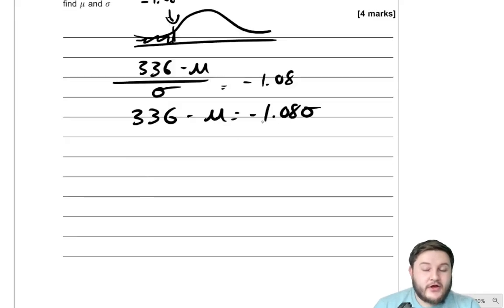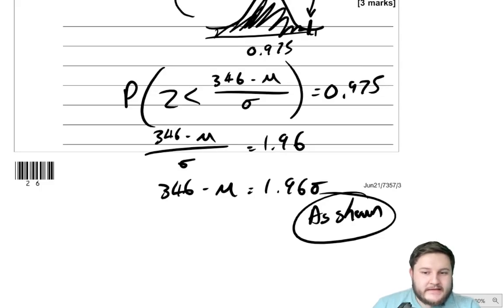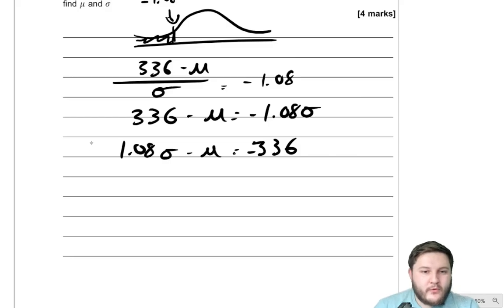And then we can rearrange. So we get 1.08 sigma take away mu is equal to negative 336. And from the previous part, we get 1.96 sigma plus mu is equal to 346.